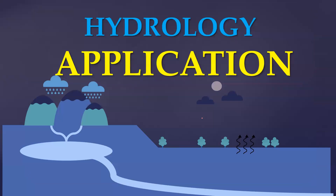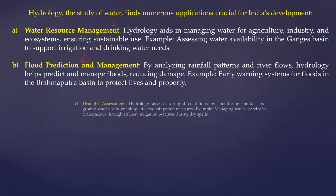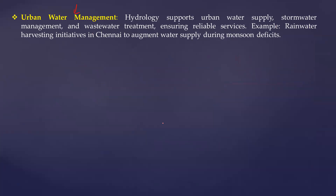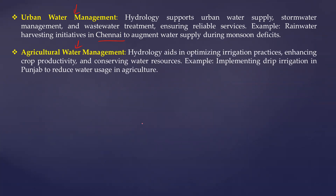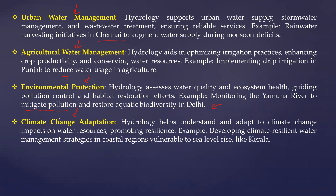The applications of hydrology are closely related to its scope: water resource management is the first application; flood prediction and management is the second; drought assessment is the third; hydropower generation is the fourth; urban water management is the fifth — as seen in Chennai where rainwater harvesting is mandatory for government buildings in Tamil Nadu; agricultural water management, such as drip irrigation in Punjab; environmental protection, addressing Yamuna and Ganga pollution and aquatic biodiversity; and climate change adaptation — developing climate-resilient water management strategies in coastal and vulnerable areas like Kerala.